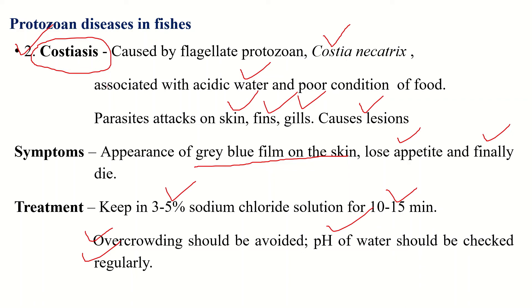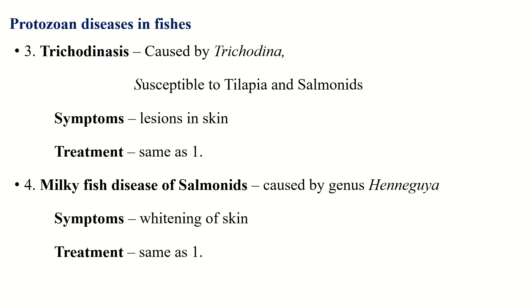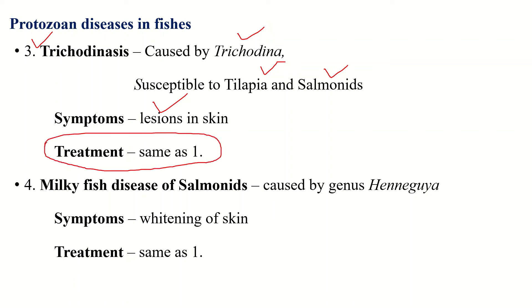Addition of potassium permanganate (KMnO4) to the pond is also a useful treatment for Costiasis. Another disease is Trichodinosis, caused by Trichodina. Tilapia and salmonids are susceptible to this disease. It mainly attacks the skin of fishes and causes lesions. The same treatments given for Ichthyophthiriasis can be applied here as well.